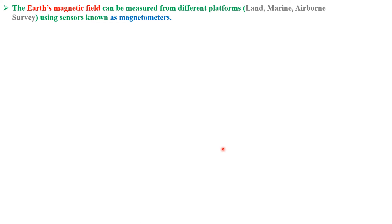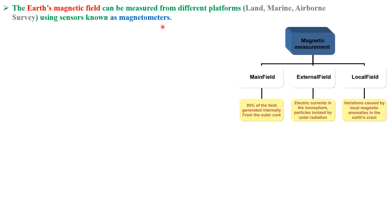The magnetic field can be measured from different platforms — land, marine, and air — using sensors called magnetometers. The total external field and internal field together make up the main field. The contribution from the external field is around two percent, originating from the ionosphere, solar radiation. The main field is generated by the motion of liquid in the outer core, and the local field represents variation caused by local magnetic anomalies in the Earth's crust.